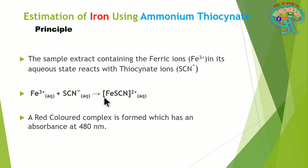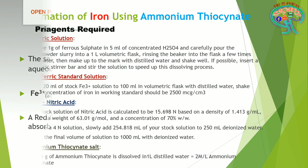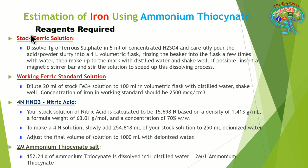We are going to use ammonium thiocyanate as the reagent. In aqueous state, both the ferric ions and the thiocyanate ions react to form a red colored complex, which has an absorbance at 480 nanometers. In colorimetry or spectrophotometry, we measure the absorbance at 480 nanometers.